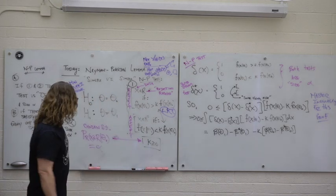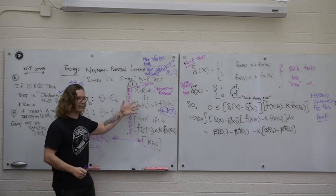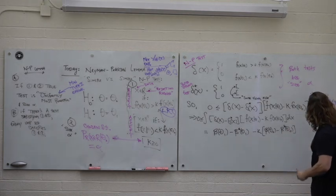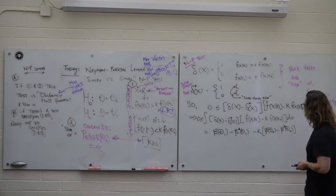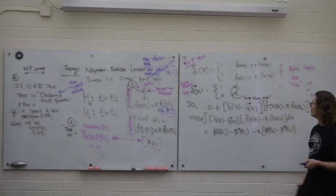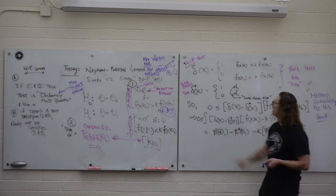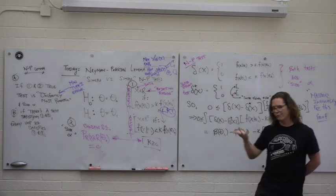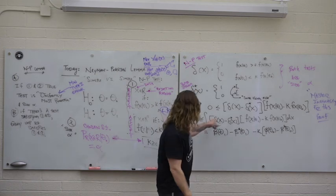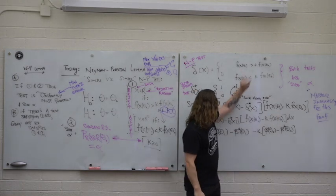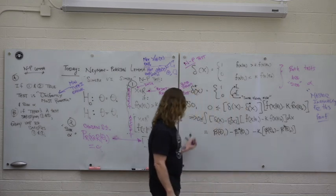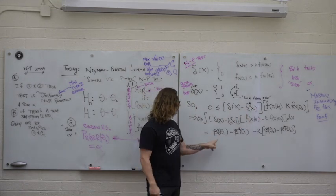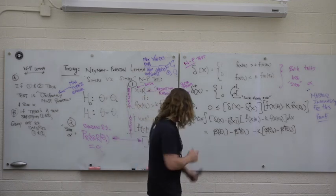So if this is always positive, the integral is always positive. The integral reduces to these four power functions. Note that once I expand this integral, there are four terms — delta functions multiplied into their density functions, integrated over x. Each integral is the expectation of the delta function under a given theta. Expectations of indicators are probabilities of that event, so this integral is the probability that delta(x) equals 1 given theta-naught.